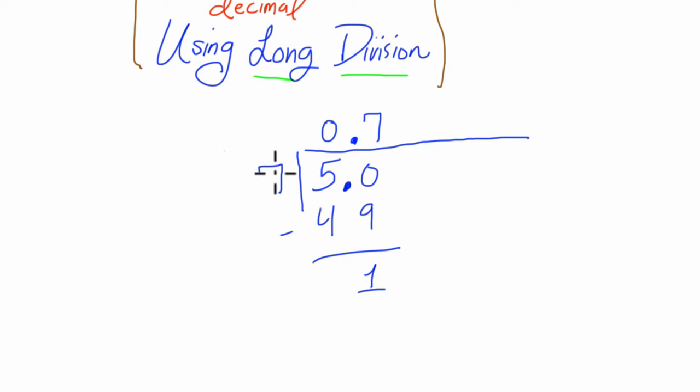So really, I'm thinking of 7 going into 5, 0.7 times, but it's much harder to think of. So instead we think 7 goes into 50 seven times.